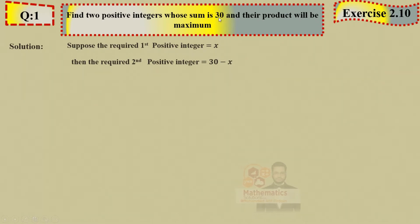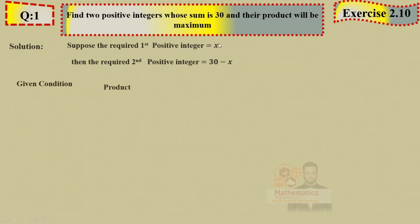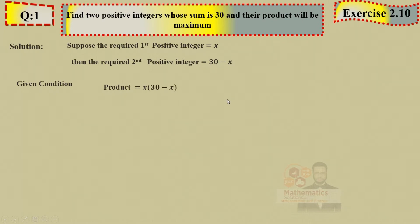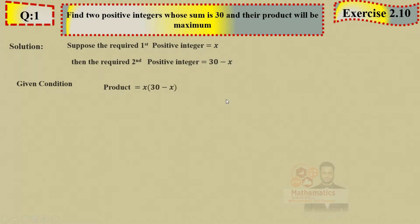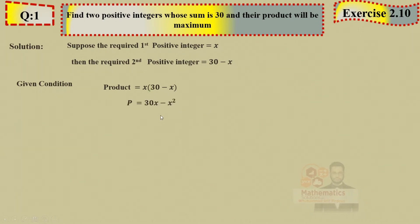For the product, we multiply both numbers and check for maximum using the second derivative. Product P = x × (30 − x). Multiplying out: P = 30x − x².